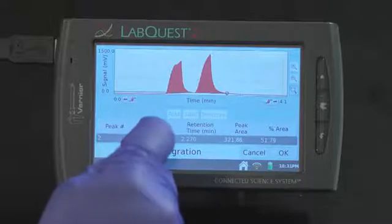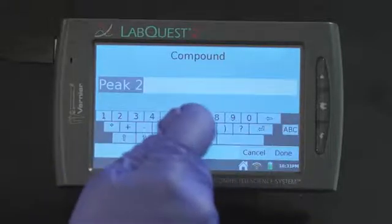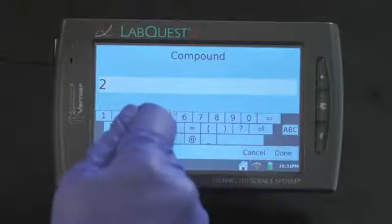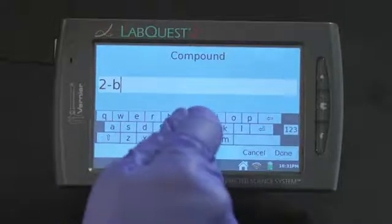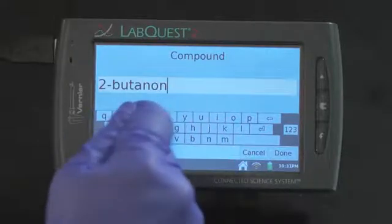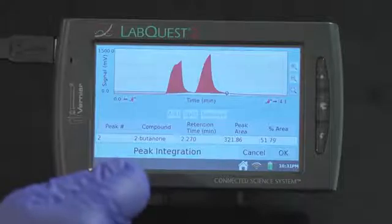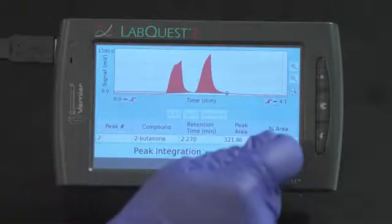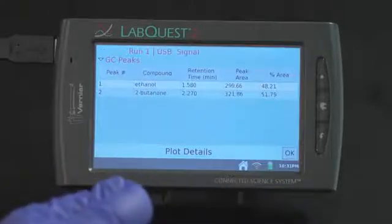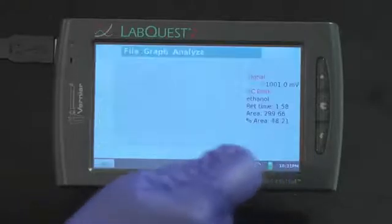For the second peak, type in 2-butanone. When you're complete, press OK. This will bring up the plot details. Then select OK to return to your graph.